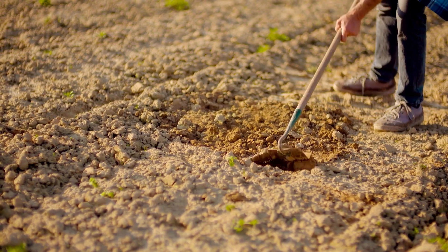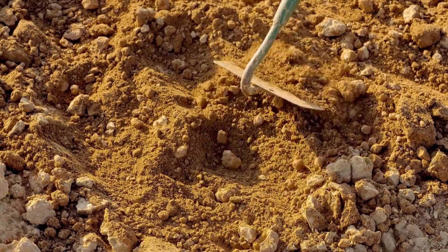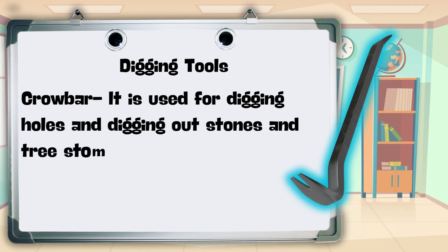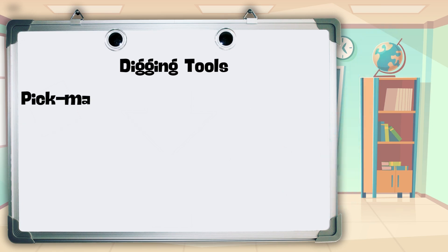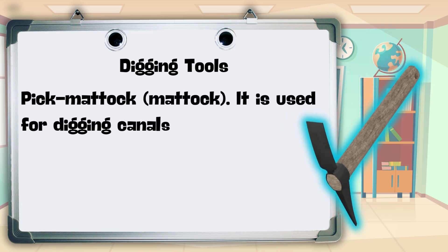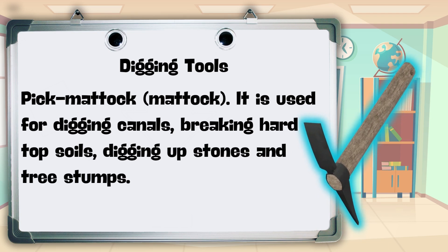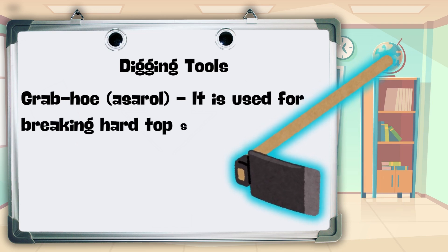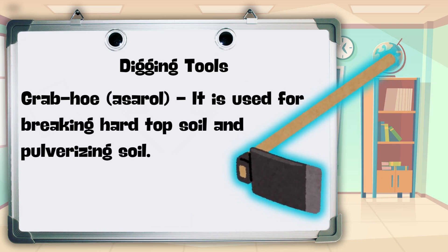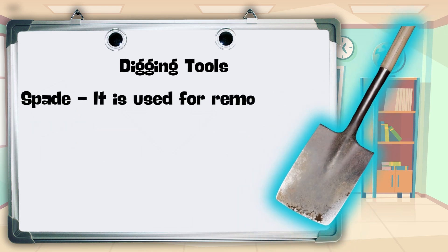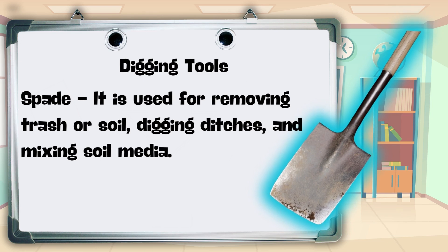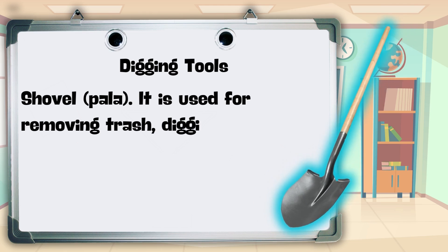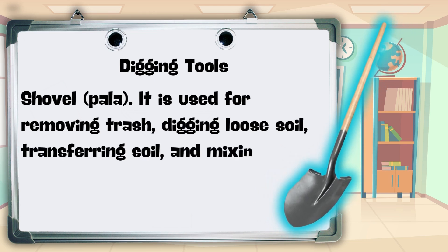Agricultural tools are commonly light and handy, needed in accomplishing farm activities. For digging tools: crowbar — used for digging holes and digging out stones and tree stumps; pickmatic or mattock — used for digging canals, breaking hard top soils, and digging up stones and tree stumps; grab hoe or sorrel — used for breaking hard top soil and pulverizing soil; spade — used for removing trash or soil, digging ditches, and mixing soil media; shovel or palla — used for removing trash, digging loose soil, transferring soil, and mixing soil media.